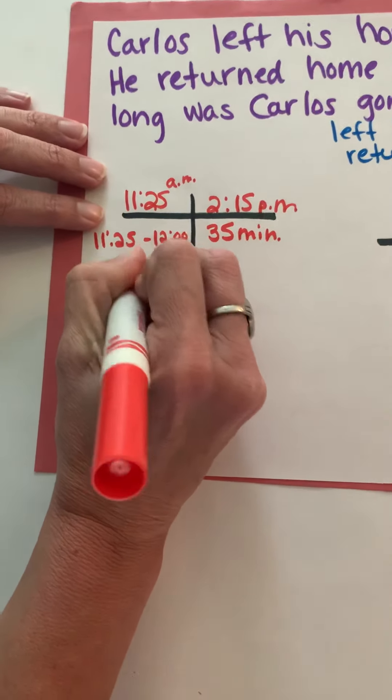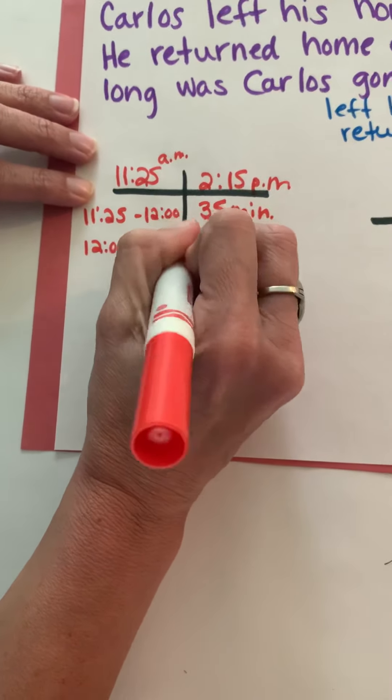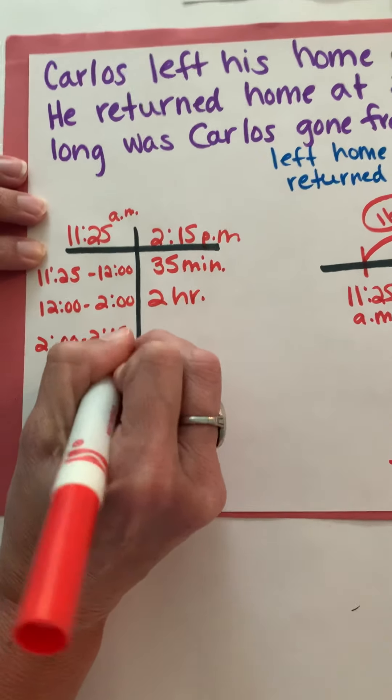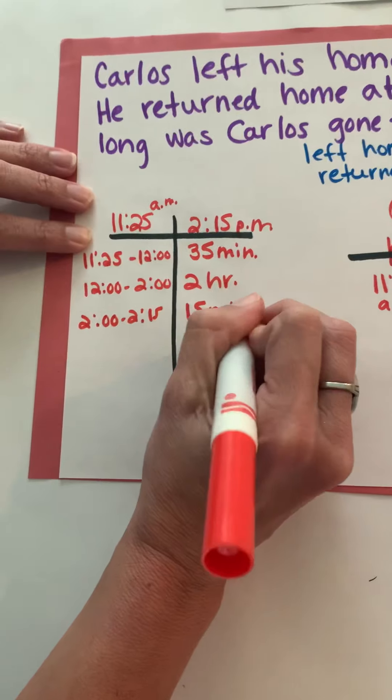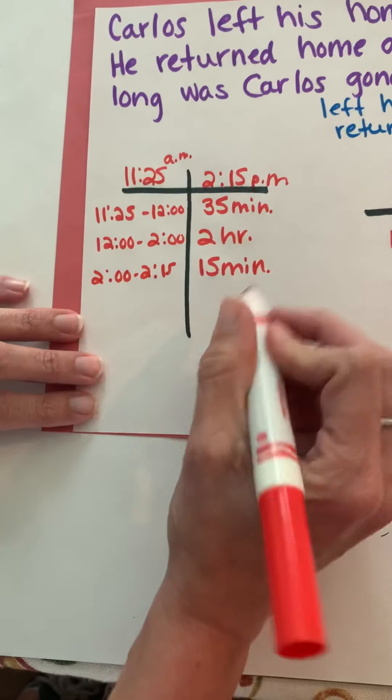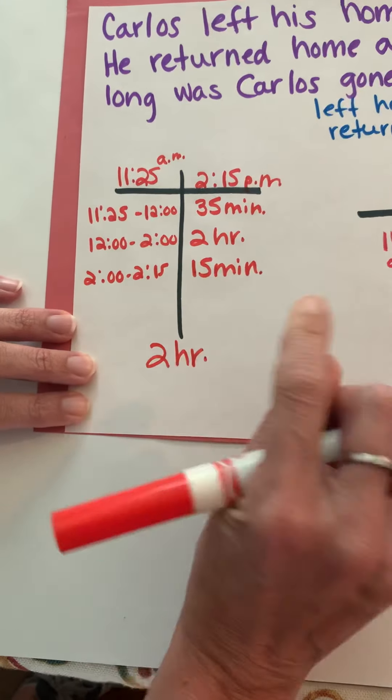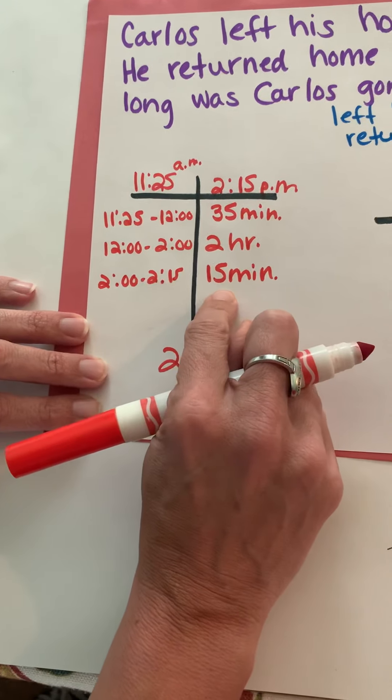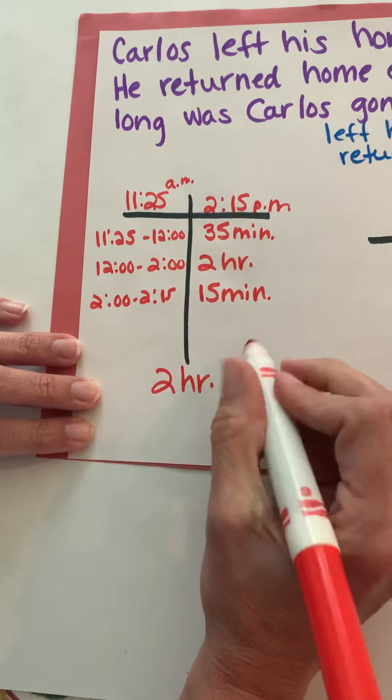And then I'm going to go from 12 o'clock to 2 o'clock and that's two hours. And then from 2 o'clock to 2:15 is 15 minutes. So now I've got my two hours and earlier I realized 35 plus 15, if I'm at 35 add 5 that takes me to 40, add 10 takes me to 50 minutes.